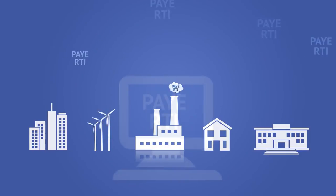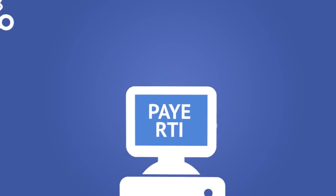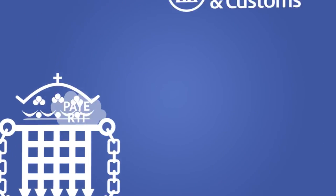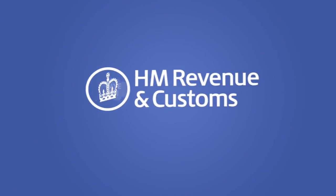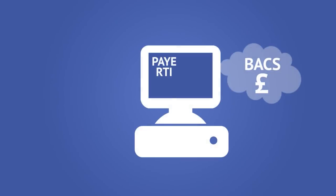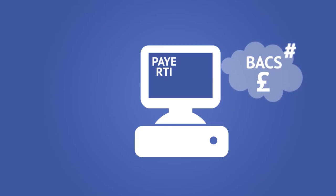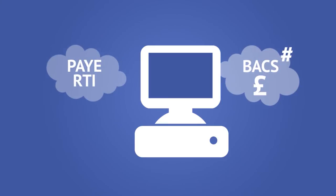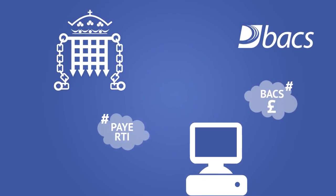Employers must notify RTI to HMRC electronically from payroll software via the government gateway every time they run payroll. For direct BACS users, payroll software will insert a special hash code into the BACS payment file, which is also present in the RTI return.